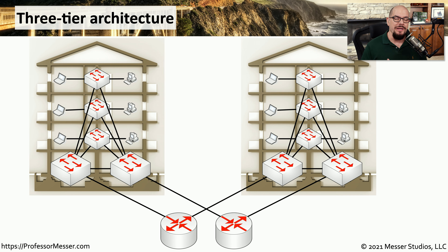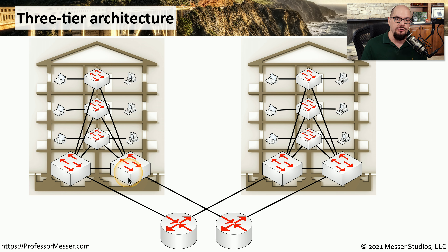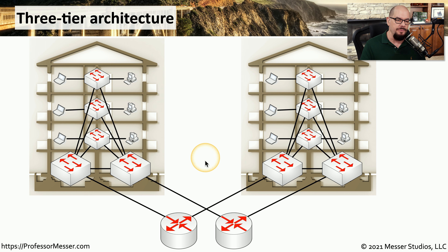On larger networks, you can expand this three-tier architecture to work between different buildings. You might have an access switch on each floor of a building. Those access switches connect to distribution switches, and those distribution switches finally connect to the core. The same thing would occur in other buildings, meaning everybody in all of these buildings would be able to gain access to the services they need in the core.